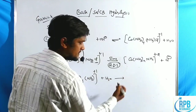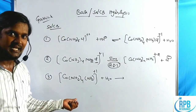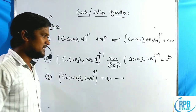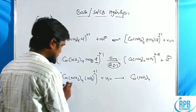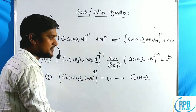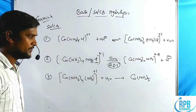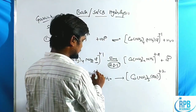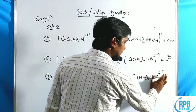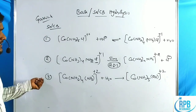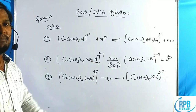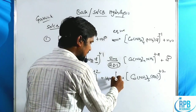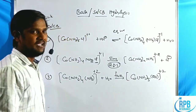In the third step, Co(NH3)4(NH2) reacts with a water molecule. The conjugate base ligand NH2 abstracts a proton from H2O, becoming NH3 again — so the complex becomes Co(NH3)5. The OH minus that remains then gives Co(NH3)5OH with a plus-two charge. Plus two remains as usual. These three steps together describe the conjugate base mechanism.